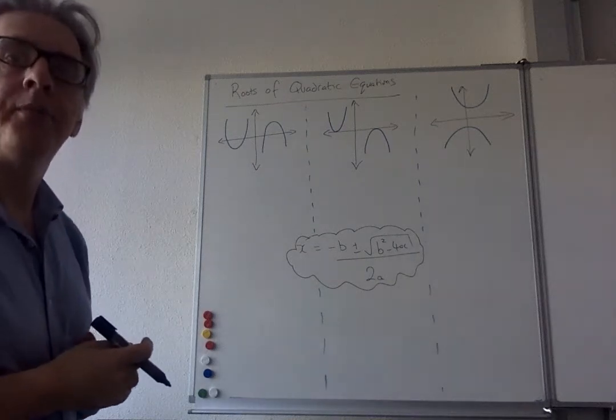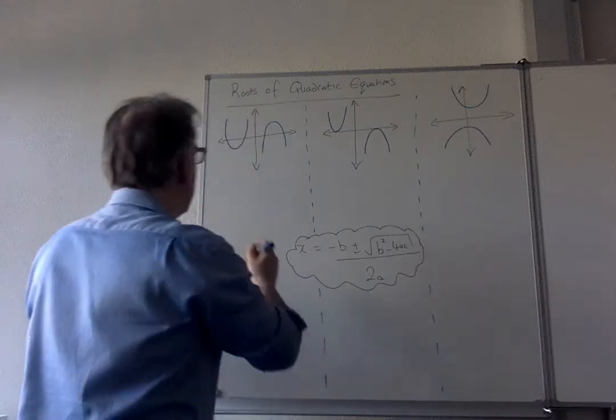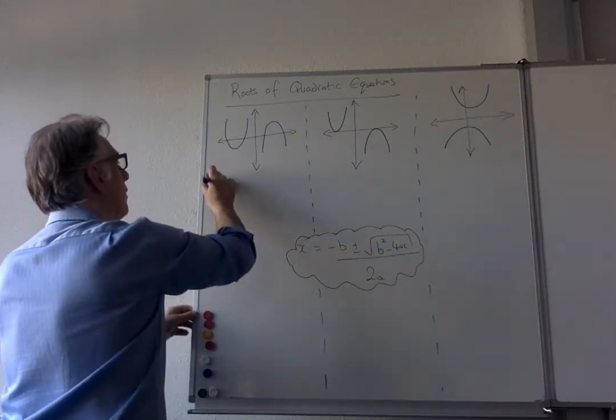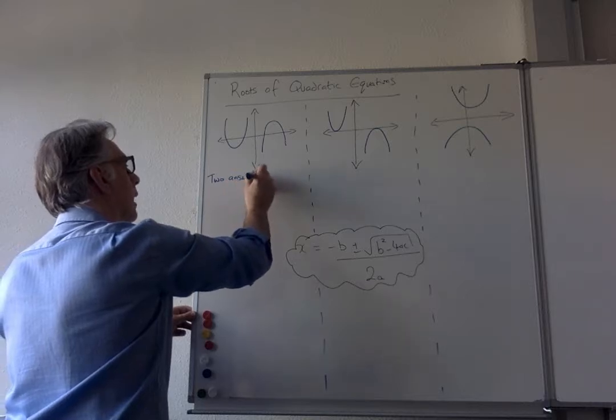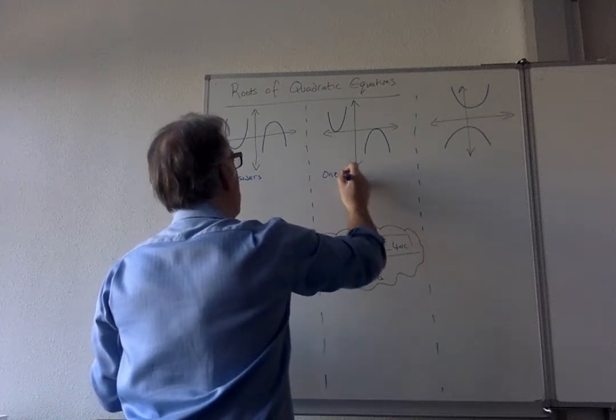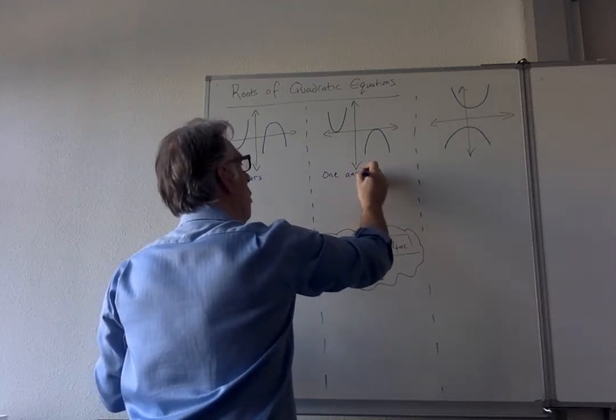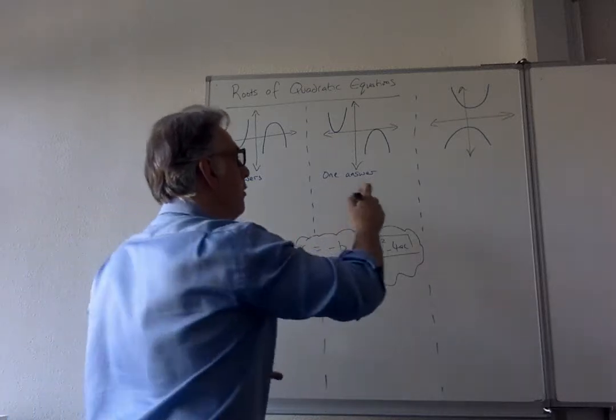So in these three different ones that we've got, this one here is that you've got two answers that are the roots of the equation, or the two x-intercepts. This one, you have one answer, and what you've got is one intercept of the x-axis.